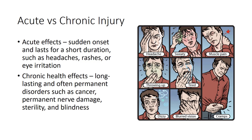A pesticide-related illness or injury may have a sudden onset and last for a short duration before the person recovers — this is acute illness. Usually the exposed person recovers as a result of medical treatment, but with a severe exposure the person may die. The most common symptoms include headache, rash, or eye irritation. Exposure to some pesticides produces chronic health effects — long-lasting and often permanent disorders such as cancer, permanent nerve damage, sterility, and blindness.